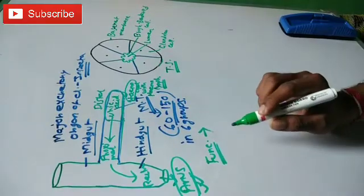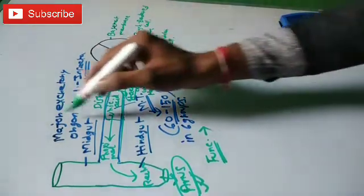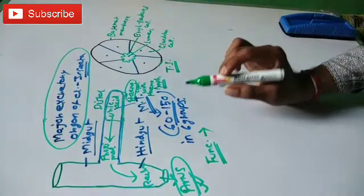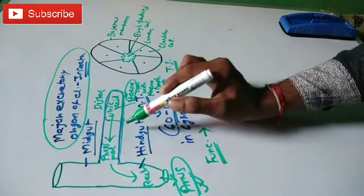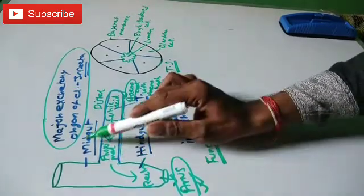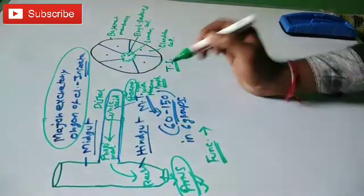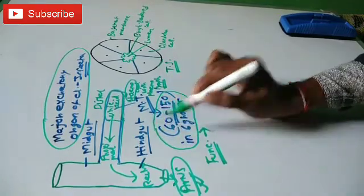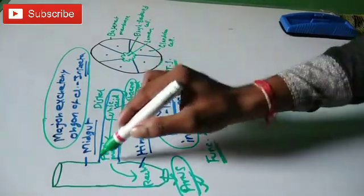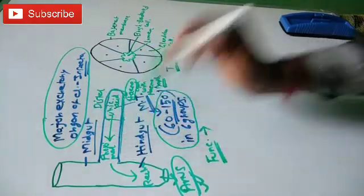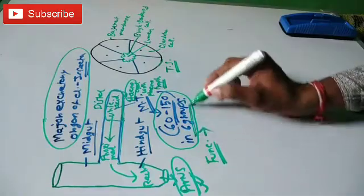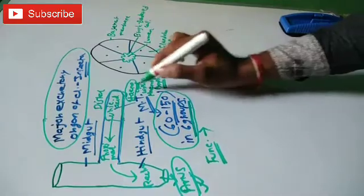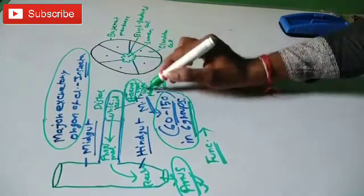To repeat: the Malpighian tubules are the major excretory organ of class Insecta of phylum Arthropoda. Their location is at the junction between midgut and hindgut. Their numbers are variable — 60 to 150 — arranged mainly in six groups, hanging freely in the hemocoel filled with hemolymph.